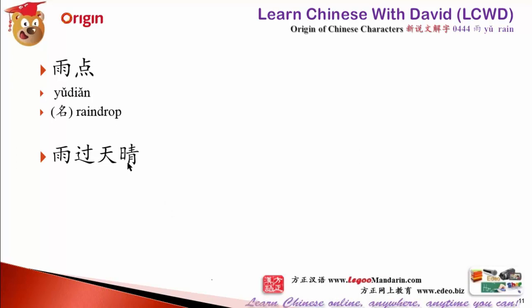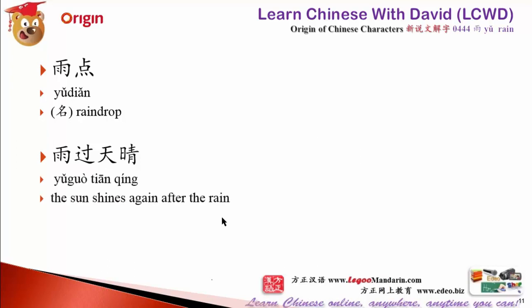雨过天晴 — 过 means pass, 晴 means sunny. The rain passes and the sky becomes sunny. 雨过天晴 means the sun shines again after rain, and it also means life comes back to normal after a storm or some troubles.